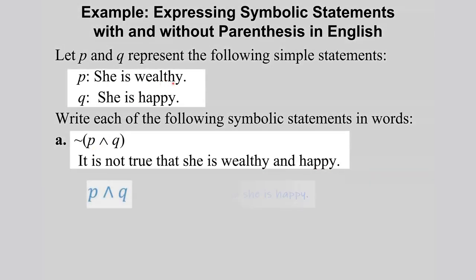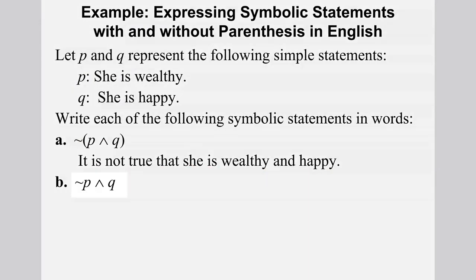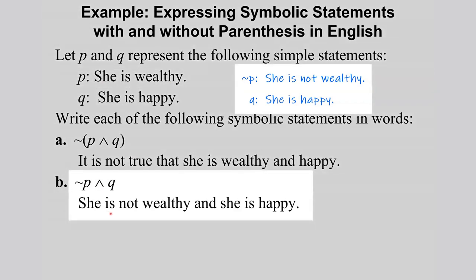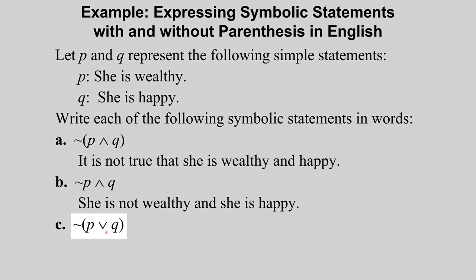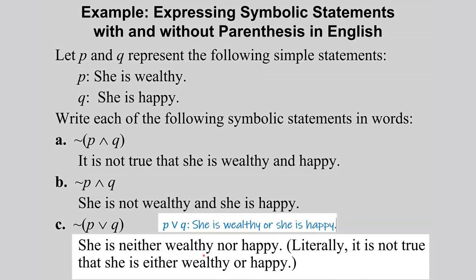So again, P is 'wealthy' and Q is 'happy,' and we have a negation, so that is 'it is not true that she is wealthy and happy.' For 'not P and Q,' you negate P — 'she is wealthy' — so you have 'she is not wealthy,' and then Q is 'she is happy,' giving us 'she is not wealthy and she is happy.' For 'not P or Q,' negating gives us 'it is not true that she is either wealthy or happy.'